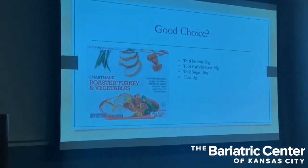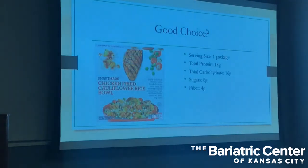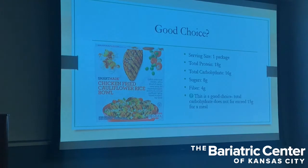Here's an example using a frozen meal. Total protein is 20 grams, total carbohydrate is 36 grams, total sugar is 16 grams, fiber is 3 grams. Not the best choice — looking at total carbohydrate, it well exceeds 15 grams per meal, even though it has 16 grams of sugar and 20 grams of protein. Next example: one package with 18 grams of protein, 16 grams of carbs, 8 grams of sugar, 4 grams of fiber. This one's a good choice — carbohydrate does not far exceed 15 grams, it's about 1 gram over, and it has at least 15 grams of protein.